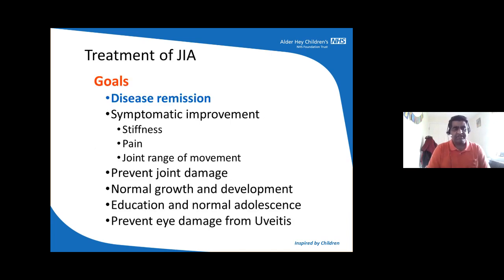Treatment of JIA, like any other chronic inflammatory illness, aims to get disease control and achieve remission as quickly as possible with as little medication as possible, then continue to have symptomatic improvement in quality of life by improving stiffness, pain, and range of movement. The long-term aim is to keep patients in remission, prevent joint damage, give children normal growth and development, enable normal education and adolescent period, and ensure they don't get long-term eye damage from untreated uveitis.